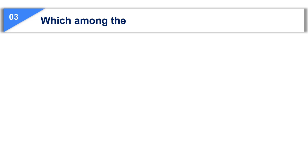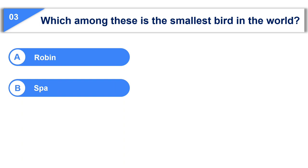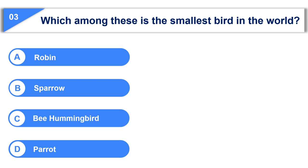Which among these is the smallest bird in the world? Option A, robin. Option B, sparrow. Option C, bee hummingbird. Option D, parrot.